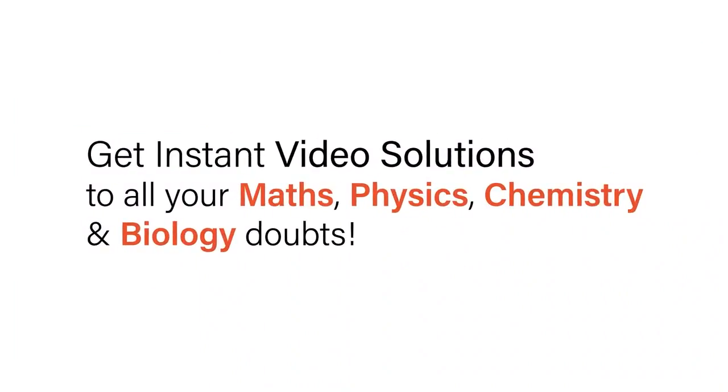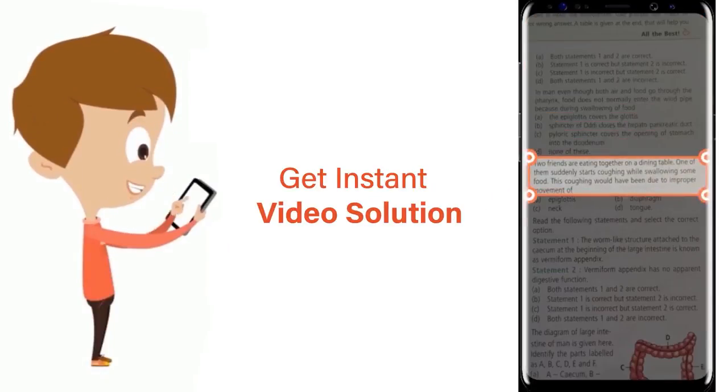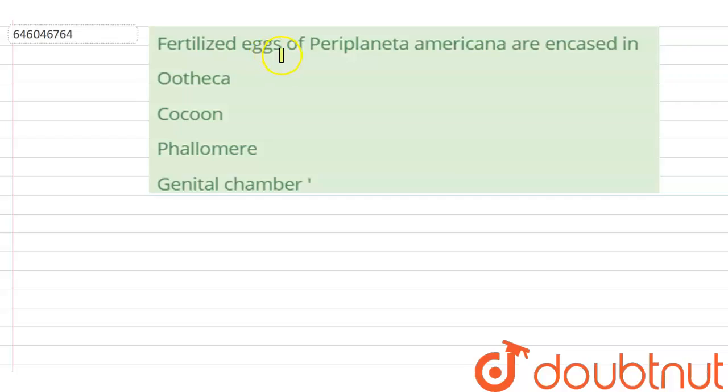With Doubtnet, get instant video solutions to all your maths, physics, chemistry, and biology doubts. Just click the image of the question, crop the question, and get instant video solution. Download Doubtnet app today. Hello students, your question is: fertilized eggs of Periplaneta americana are encased in what?